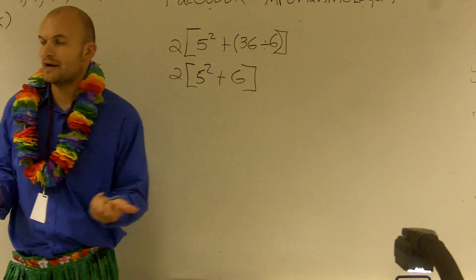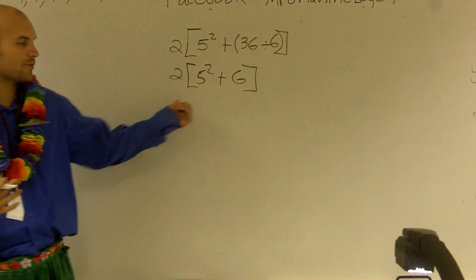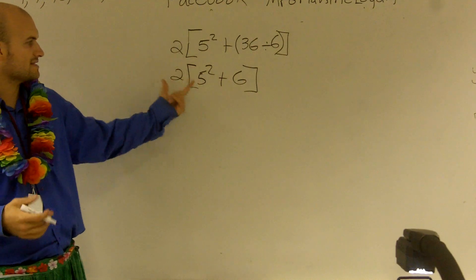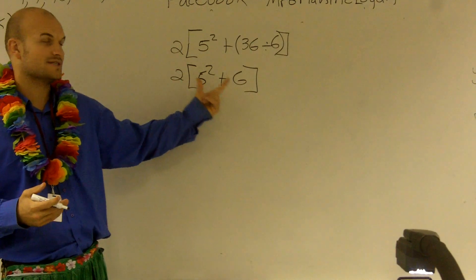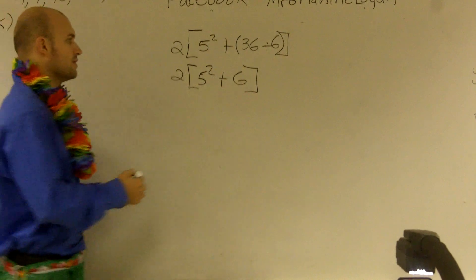Then the next thing, by using PEMDAS, is going to tell me to square my problem. So that's the next thing I want to look at. And I always want to make sure you look inside the parentheses. 5 squared leaves me 25.